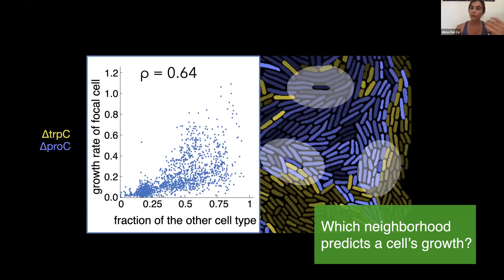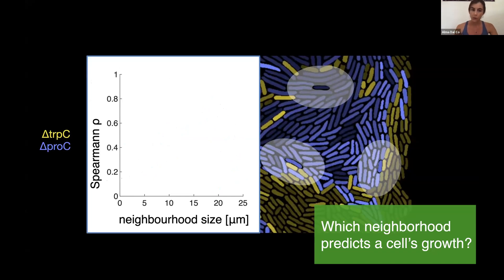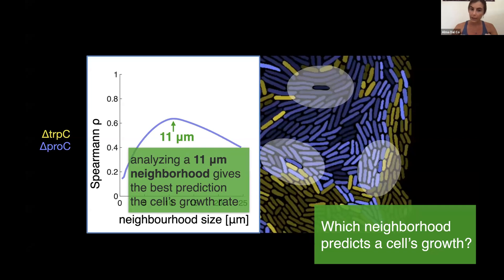Now if we iterate this process and we analyze different neighborhood sizes, we obtain a whole curve of Spearman correlations and we find that there's a maximum of the correlation, which is found at 11 micrometers from the cell membrane. So this is the neighborhood that we have to analyze to best predict a cell's growth rate. This is what we call interaction range.